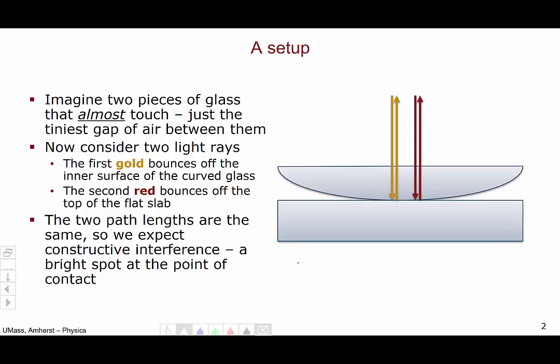Whereas for the red, it is in the air, because remember there's a tiny sliver of air between these two pieces of glass, and is bouncing off of the flat surface. So there is an additional half wavelength added to the optical path length. So the difference between these two paths is actually one-half of a wavelength, and so we get destructive interference. This concludes this video.